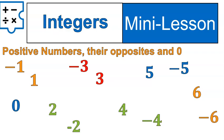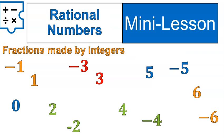So positive, negatives, and zeros. Now, the next set of numbers we're going to talk about are rational numbers. They include fractions that are made by integers. In other words,